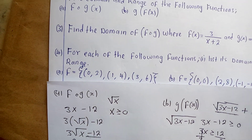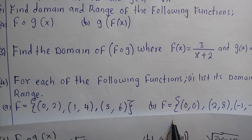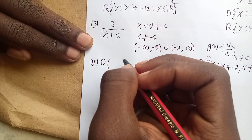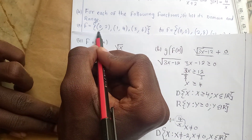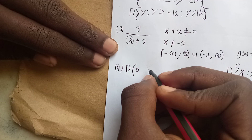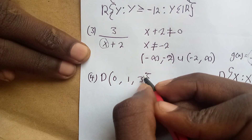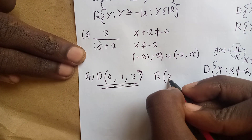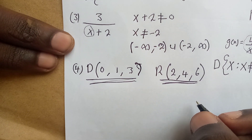Question four is straightforward: for each of the following functions list its domain and range. The domain means the values on the x-axis, and the range means the values on the y-axis. From the given set, the domain values are: 0, 1, 3. The range values are: 2, 4, 6.